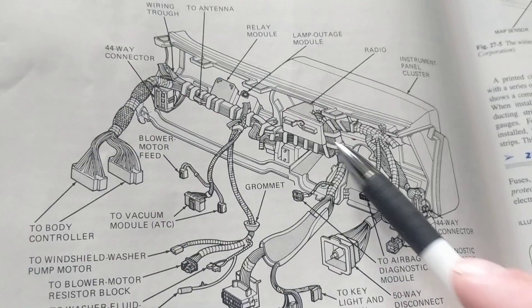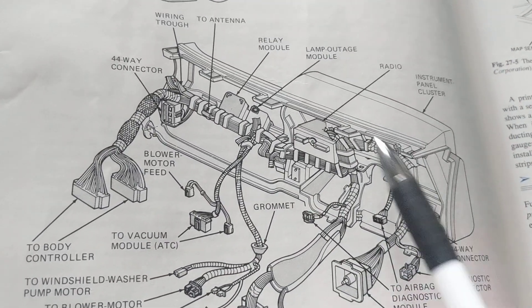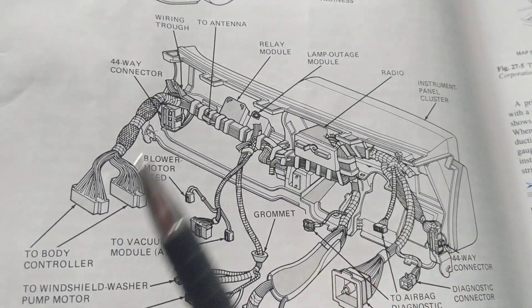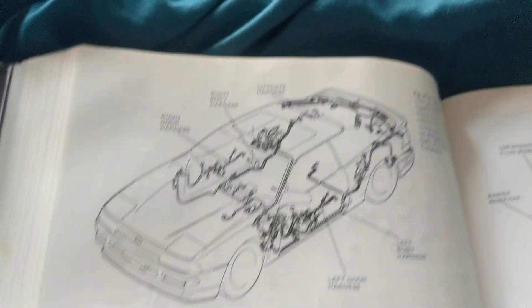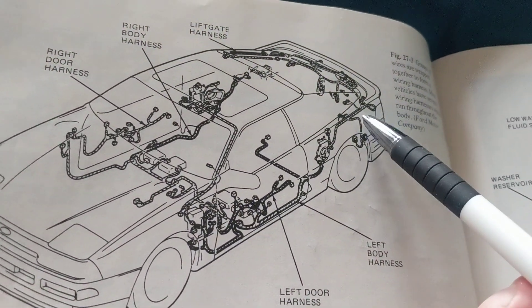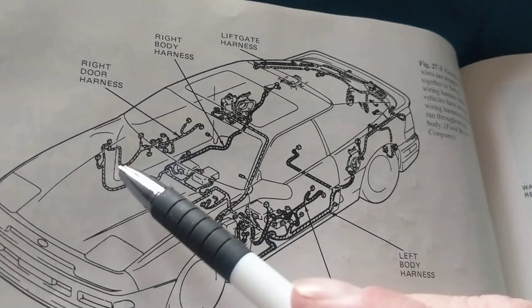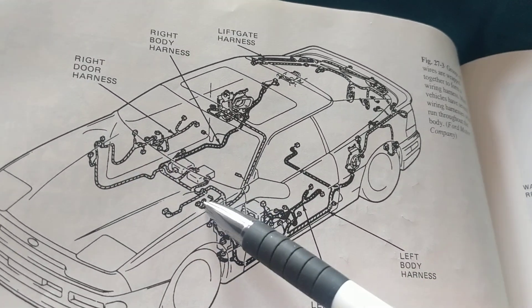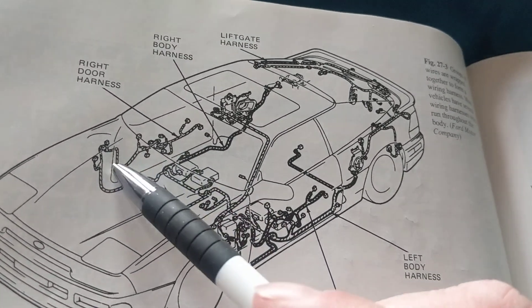So there are many connections. It's called the harness. Where do they go? Look where the harness goes. From here, from the fuse panel, actually, it divides.